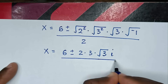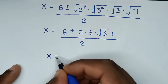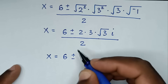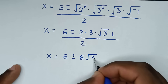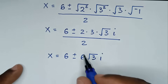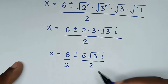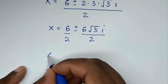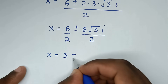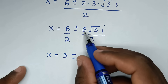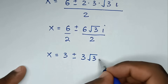And square root of negative 1 is i. So x is equal to 6 plus or minus 2 times 3 times square root of 3 times i, which is 6 square root of 3i, then divide by 2. So x equals 6 over 2 which is 3, plus or minus 6 square root of 3i over 2, which is 3 square root of 3i.